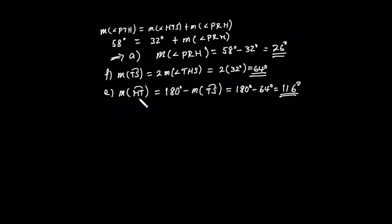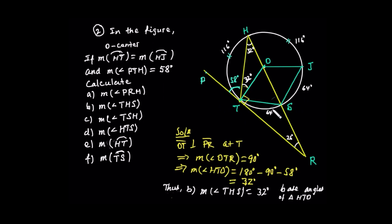The measure of arc HT is 180 minus the measure of arc TS. Since HS is a diameter, the arc is a semicircle of 180 degrees. So arc HT equals 180 minus 64 equals 116 degrees.